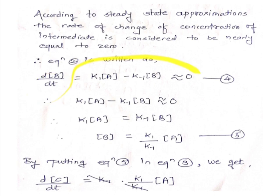Setting this term equal to 0: K1 times concentration of A minus K-1 times concentration of B equals 0. Therefore K1[A] equals K-1[B]. Shifting the negative term to the right side and solving for the concentration of intermediate B: concentration of B equals K1 divided by K-1 times concentration of A. This is equation number 5.